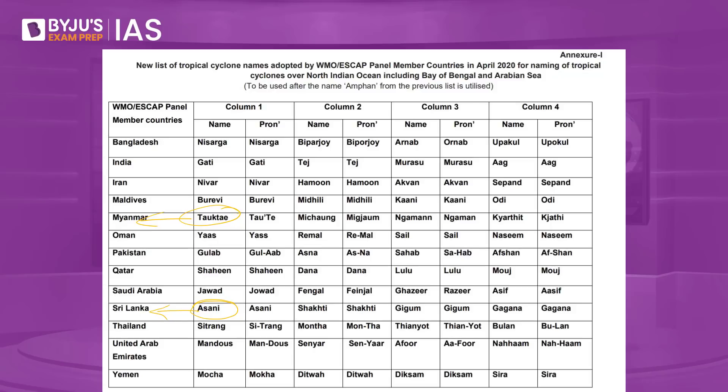How does the naming convention work? Worldwide, there are about six regional specialized meteorological centers, and five of them are tropical cyclone warning centers, mandated to issue all types of advisories. For the Indian Ocean region, the India Meteorological Department serves as the regional specialized meteorological center. In this particular area, there are about 13 member countries.